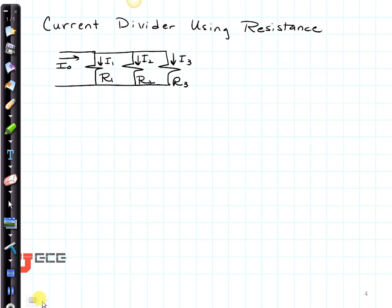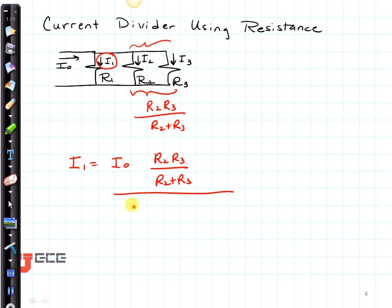Now let's do a current divider using resistance. Remember that when we've got a current divider like this, we first have to combine the two of the resistors in parallel. Let's say that what I want to find is I1. So I would combine these in parallel. This would be equal to R2 times R3 over R2 plus R3. Then if I wanted to find I1, that would be equal to I0 times the resistors that it's not going through, which is this R2 times R3 over R2 plus R3, divided by all the resistors, which is R1 plus R2 R3 over R2 plus R3. That's how we handle a current divider using resistance.